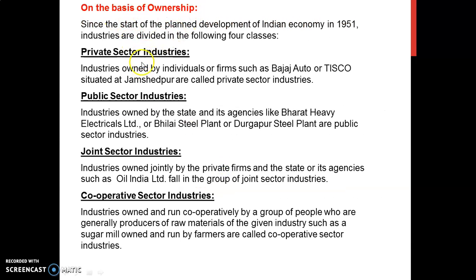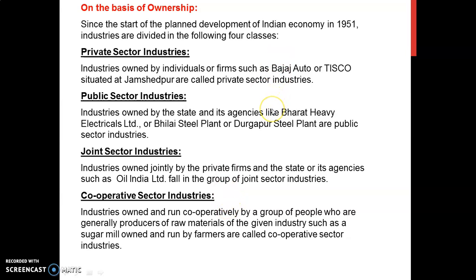On the basis of ownership, there are four types of industries. Private sector industries are those run by private individuals — for example, Tata Iron and Steel Company located at Jamshedpur. Public sector industries are totally controlled by government — for example, Bharat Heavy Electricals Limited and Bhilai Steel Plant. Joint sector industries are controlled by private individuals as well as government, jointly owned — for example, Oil India Limited. Cooperative sector industries are those run by a group of people — for example, sugar industry.